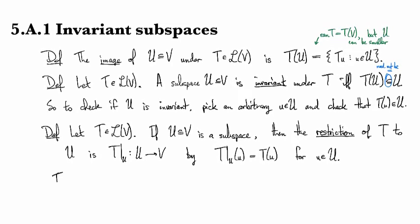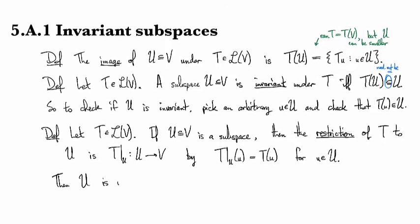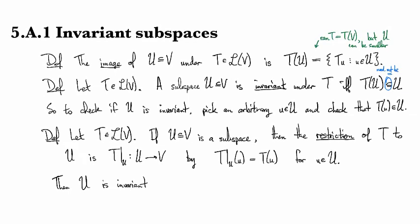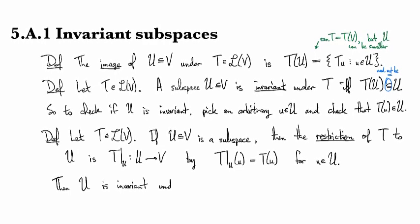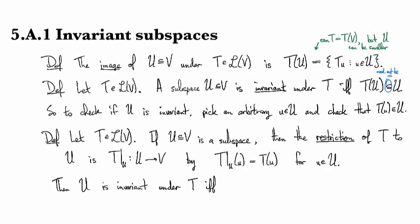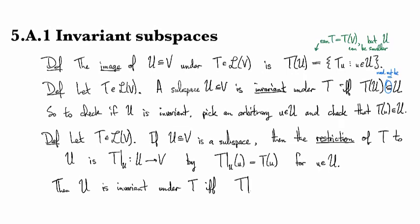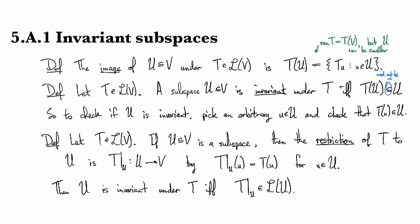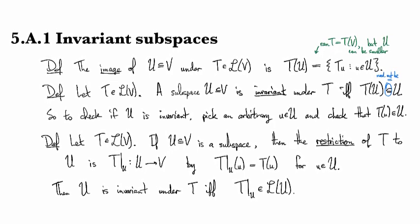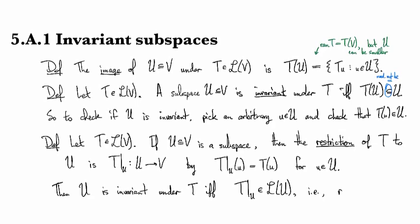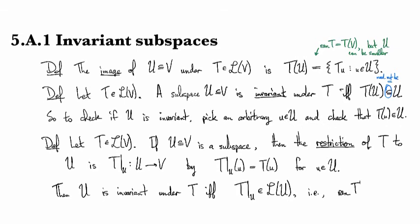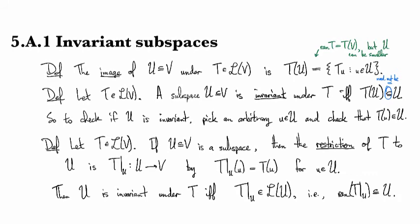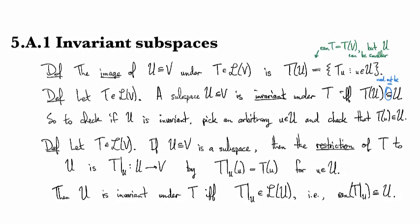With this idea, U is invariant under T if and only if the restricted operator is an operator on U. So, again, this means that the range of T restricted to U is contained in U.